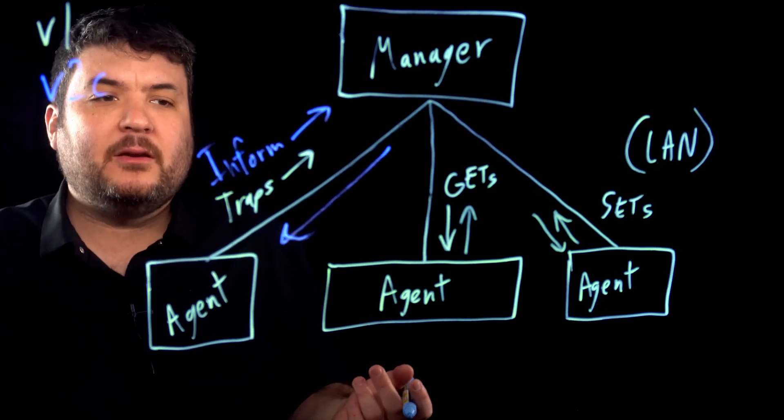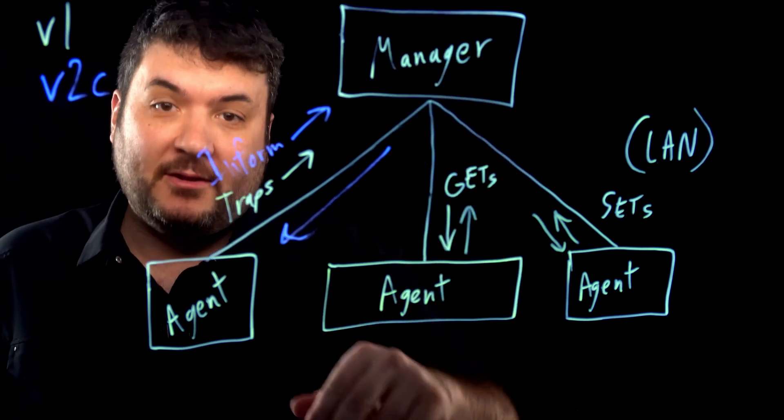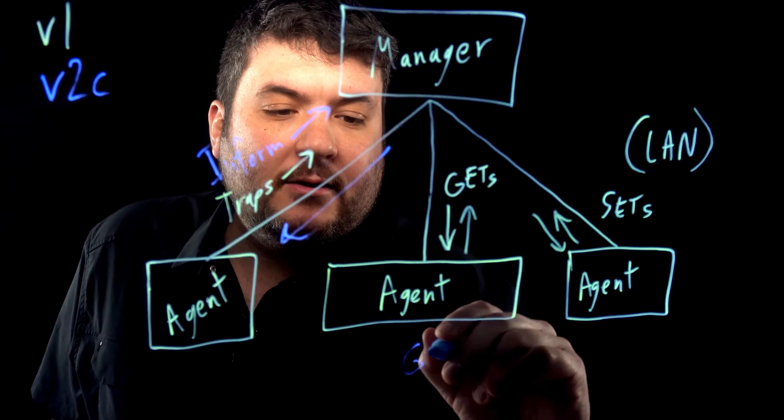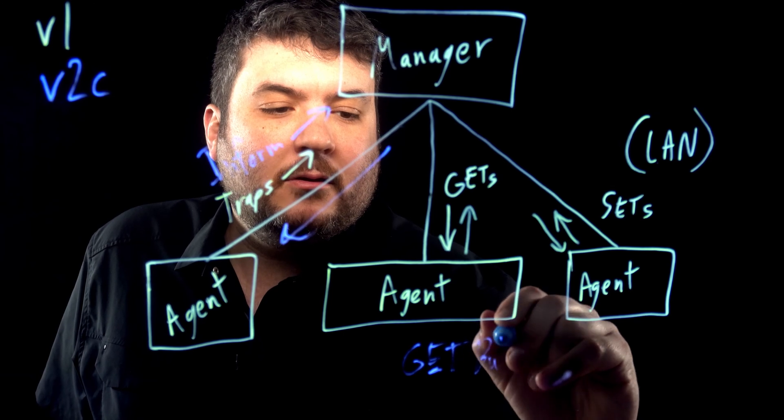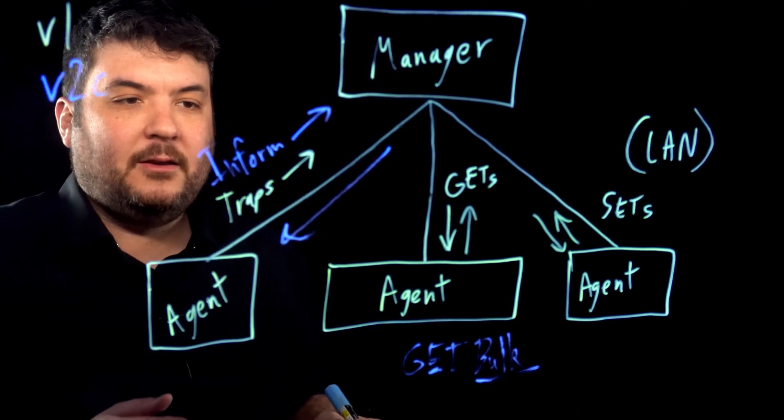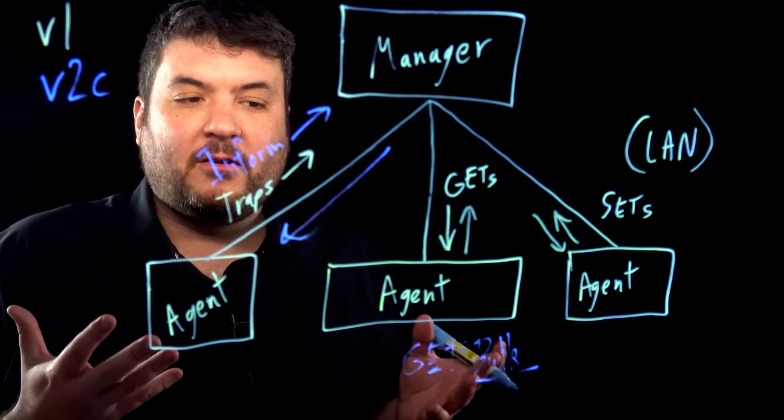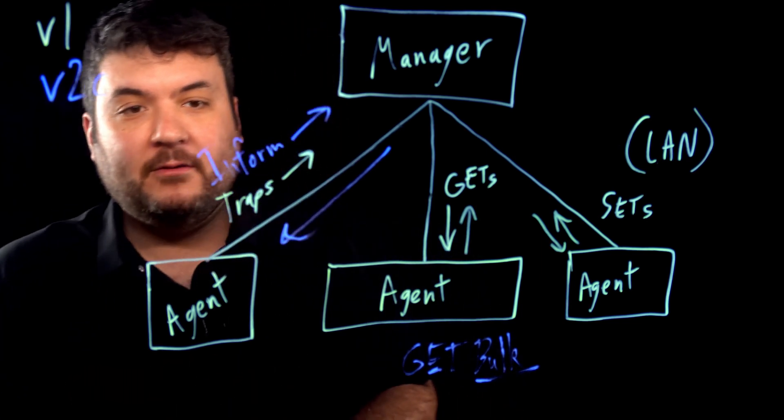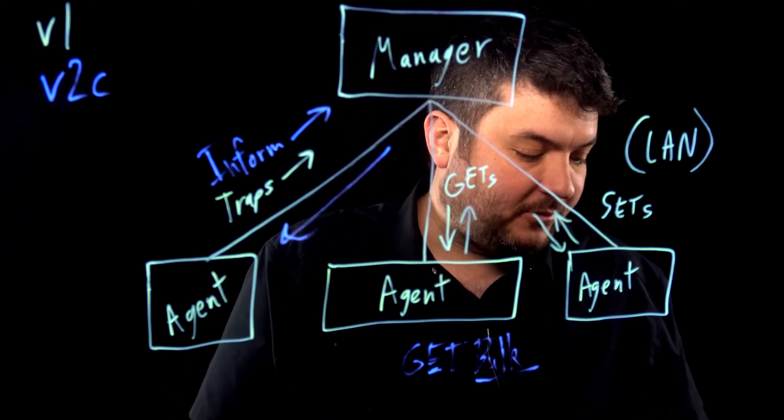So that's one thing that got added. Another message type was the get bulk. So with gets, you would have to say, give me this one value. Here's one response. And then the manager could immediately say, okay, give me this other value, and then a response. There's an idea of a get bulk message. And the bulk part just indicates that this device is being requested multiple things. So the manager will say, give me all of these values. And there will be one big response, a large packet of responses that will come back saying, all right, here are all these different values that you wanted. So as you can see, v2c added some nice little things, but nothing earth shattering. Functionally, we're still looking at SNMP.